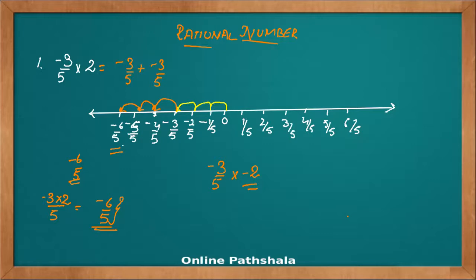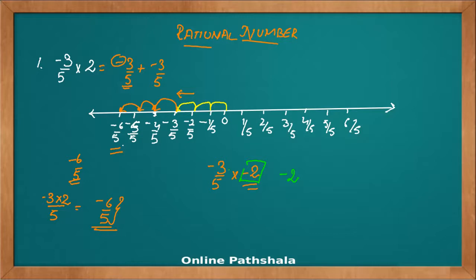In such a scenario, how do we do it on a number line? I have to move minus 3 by 5, 2 times, but it is negative 2. When it was positive 2, I used to move in the same direction as the number — which was minus 3 by 5 — so I moved in the negative direction. Now, when I have to multiply by negative 2, I have to move in the opposite direction. What I mean is: I have a negative number minus 3 by 5. If I have to jump 2 times the same number, I jump in the negative direction.